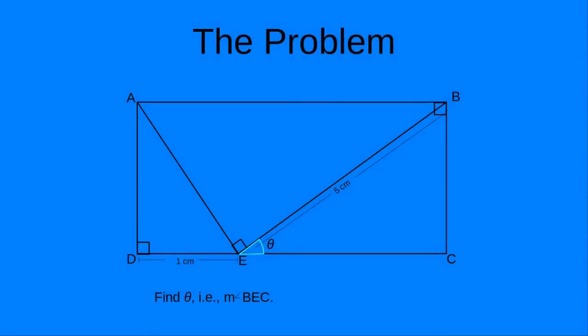Here is the problem. We are given a rectangle, basically split up into three component right triangles. There's a V structure formed by line segments coming from the vertices. We have rectangle A, B, C, D, and the length DE is given to us — it's one centimeter. Then this other length BE, one of the diagonal line segments drawn in, has a length of five centimeters. The objective is to find the measurement of angle BEC, which we can call theta.